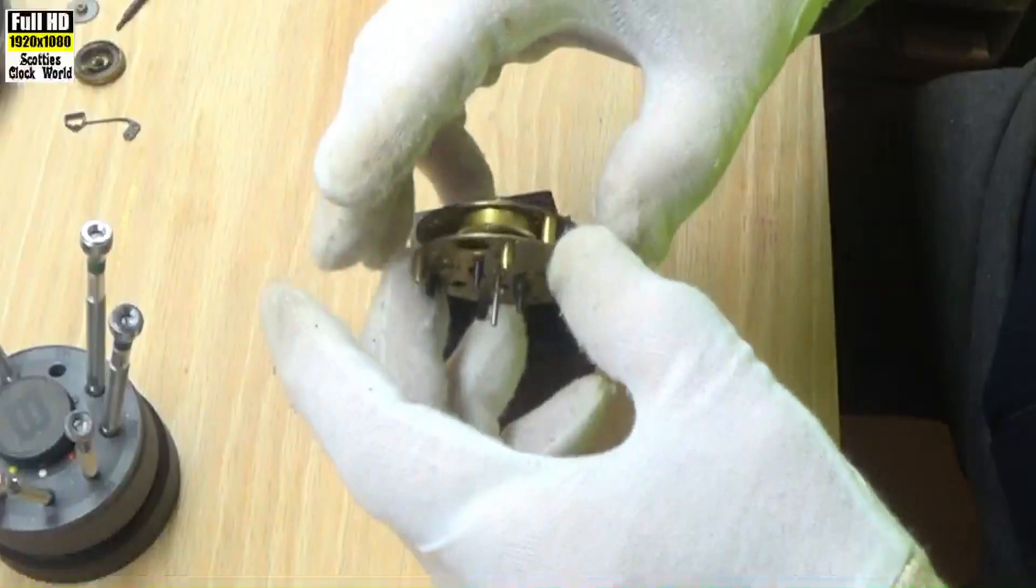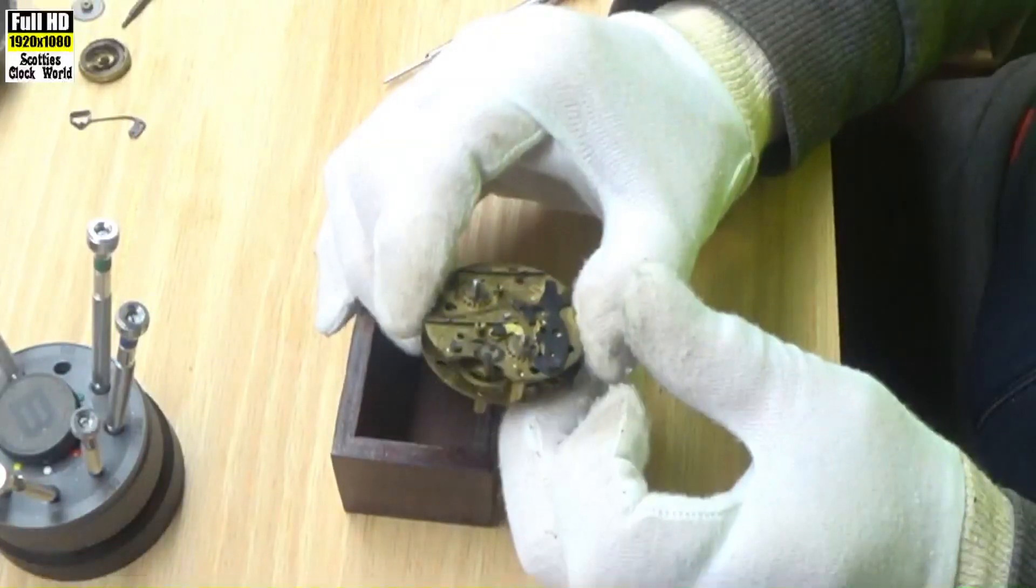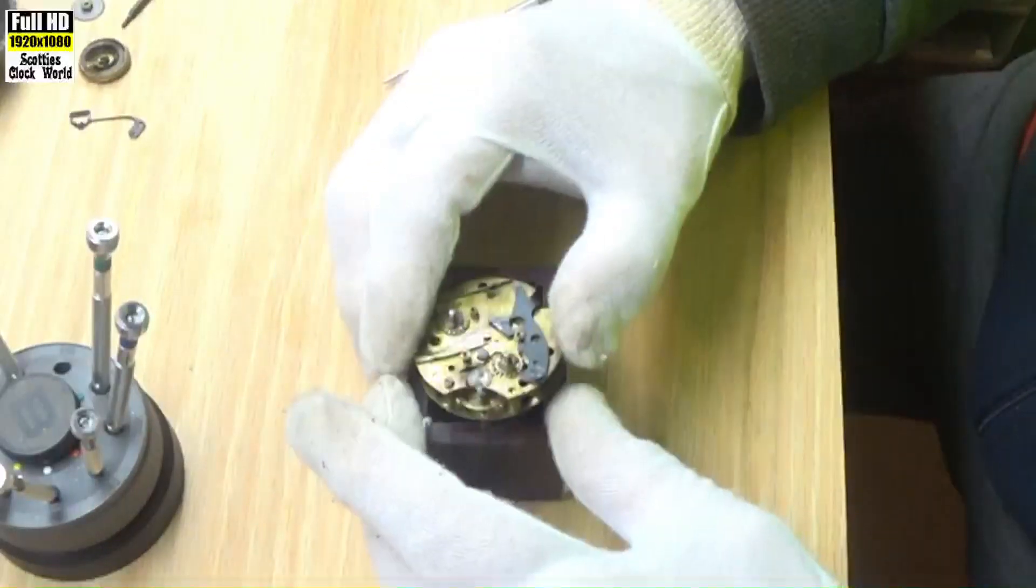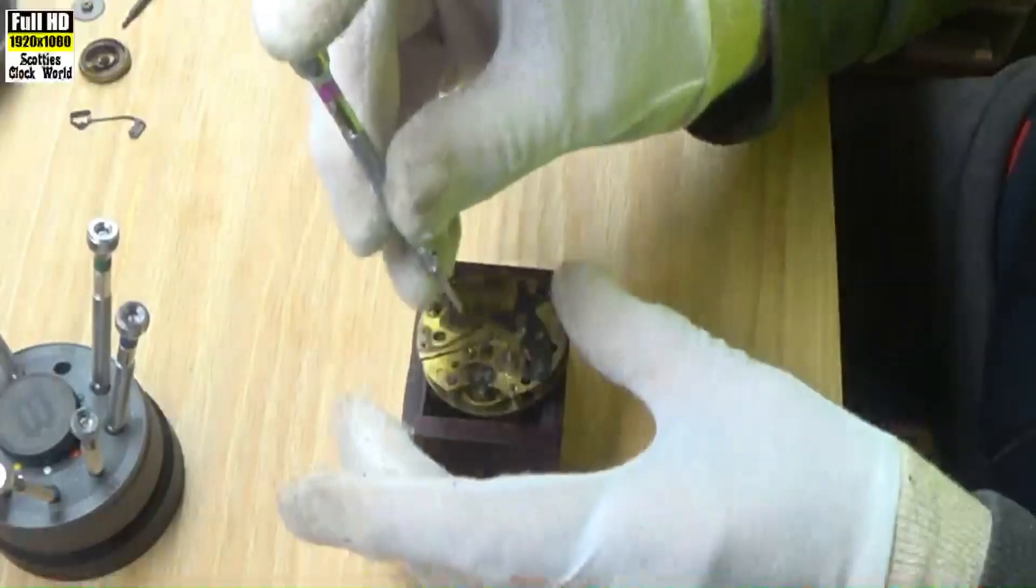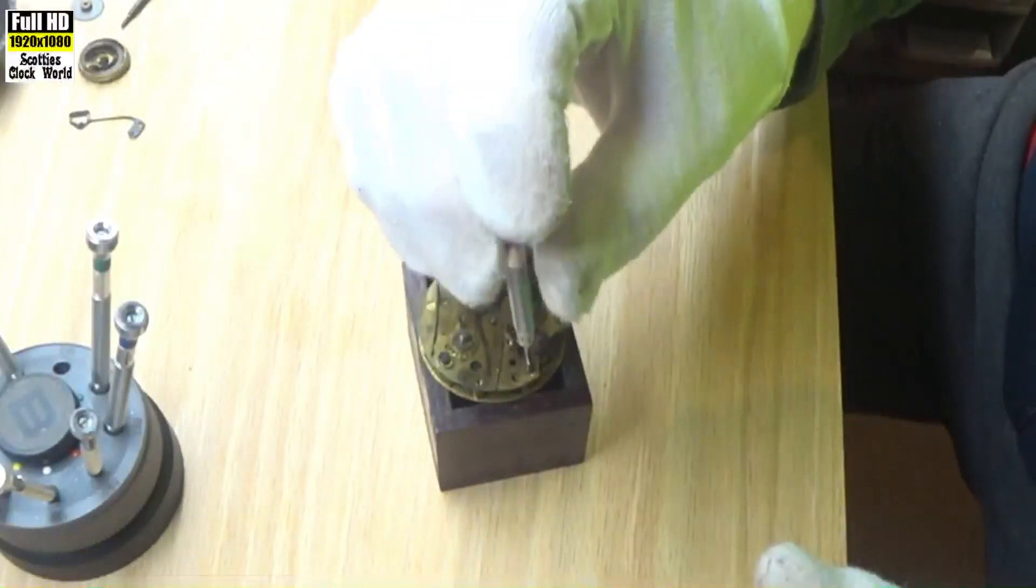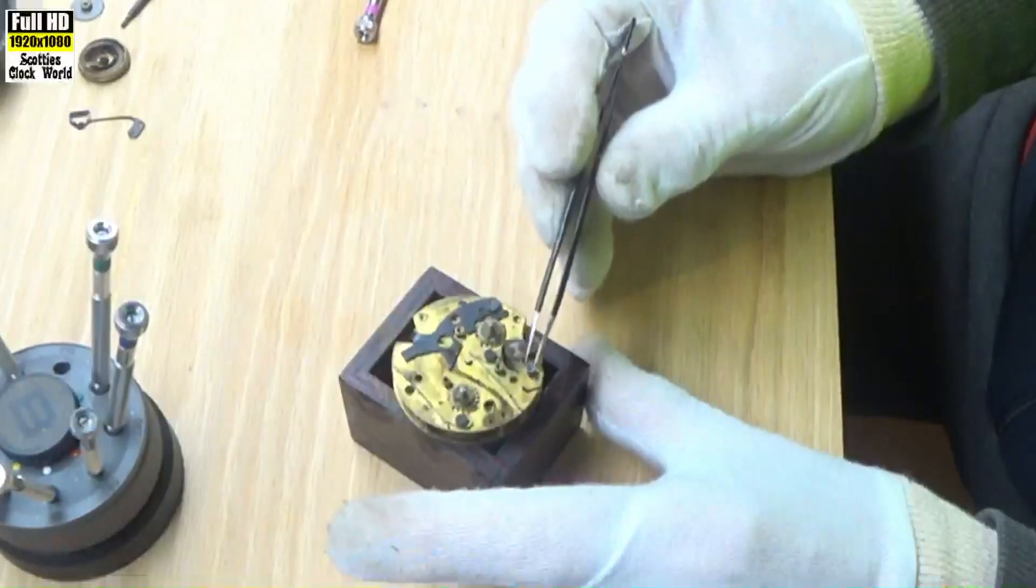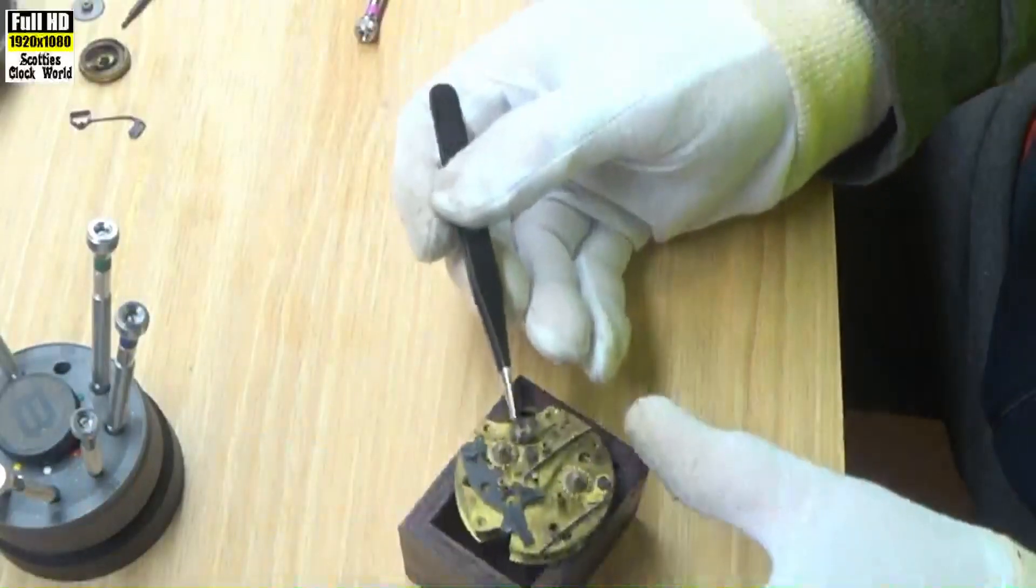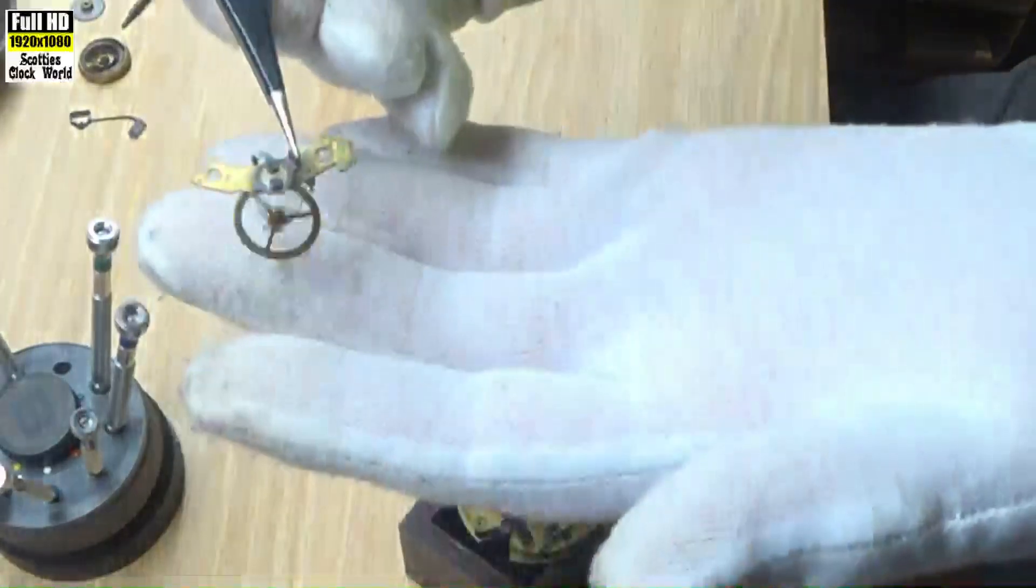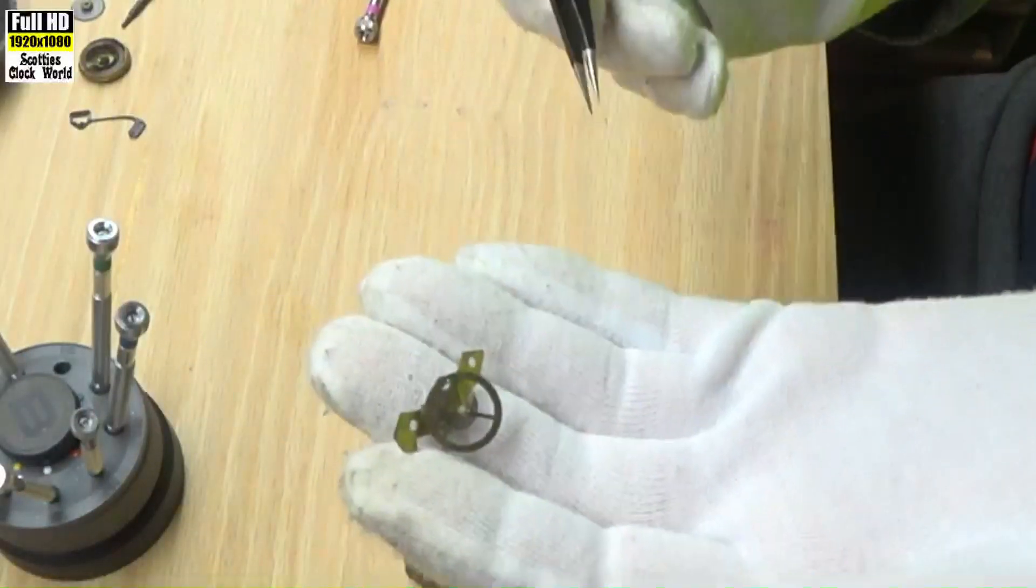And see what we got. That's the hairspring you can see there turning on the wheel. We'll remove that screw, which will give us access to the hairspring.